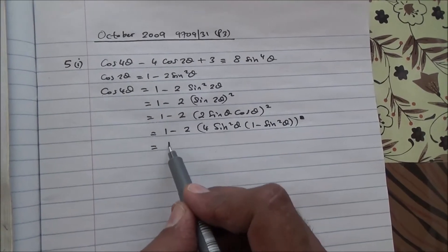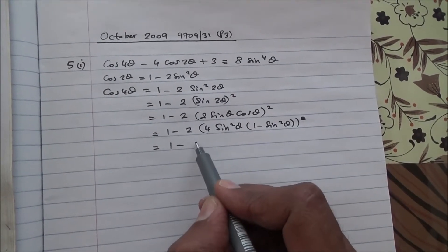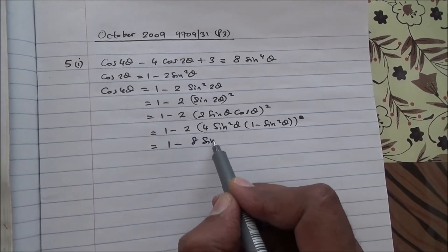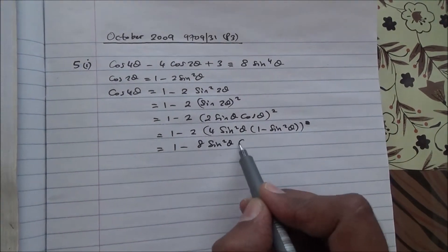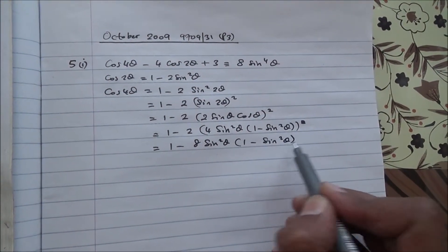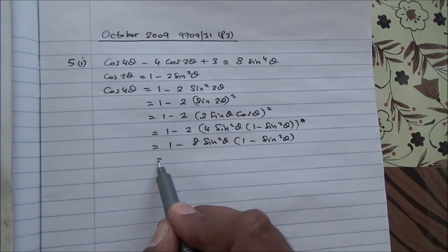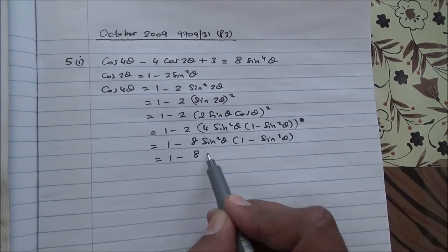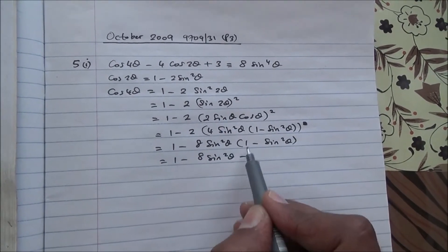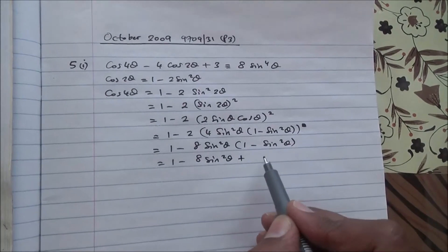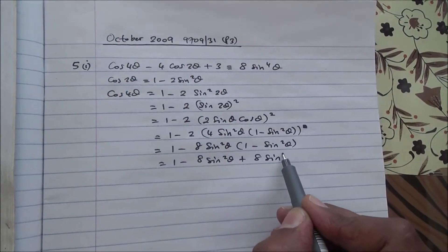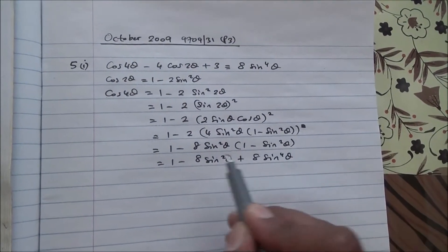What is cos²θ? It is 1 - sin²θ. So we have 1 - 8sin²θ·(1 - sin²θ), which expands to 1 - 8sin²θ + 8sin⁴θ.